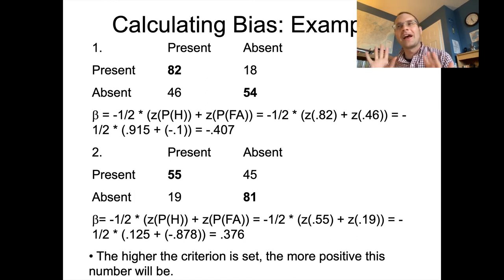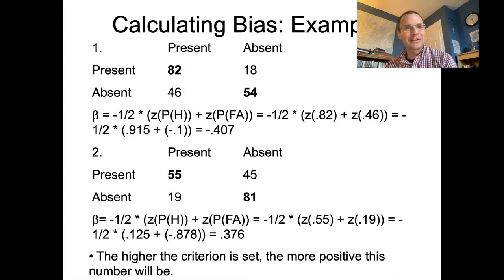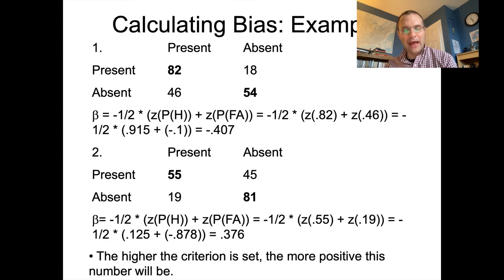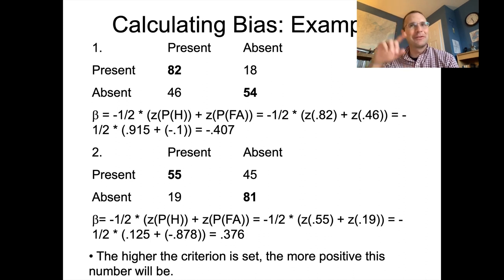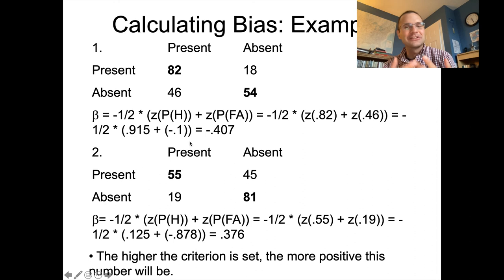I'd recommend that when you calculate bias, you look at the confusion matrices and remind yourself what positive and negative bias numbers mean for your specific experiment before interpreting them. That's all I've got for the basic signal detection theory paradigm. I'm going to save the remaining real-life experiment examples for a short follow-up video. Make sure you understand how all this math works and the general principles behind the paradigm so you can apply it to real data for homework in the future. I'll see you again in just a minute.